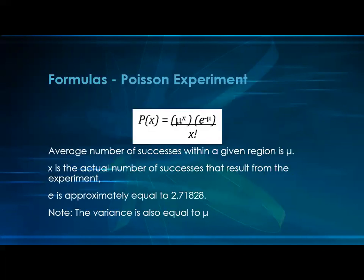The formula is: P(x) = (mu^x * e^(-mu)) / x!, where mu is the average number of successes within a given region or time period, x is the actual number of successes that result from the experiment, and e is approximately equal to 2.71828, the base of the natural logarithm. The variance is also equal to mu — in a Poisson experiment, variance and mu are equal.